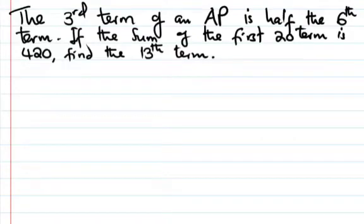Let's see the solution of these problems. Question 9, it was number 11 about AP. The 3rd term of an AP is half the 6th term. If the sum of the first 20 terms is 420, find the 15th term.